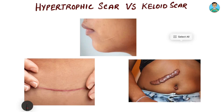Sometimes the damage or injury is so extensive that repair cannot be accomplished by cell regeneration alone. In that situation, the places where cell regeneration cannot take place are filled in by connective tissue. This connective tissue filling leads to formation of what is known as a scar.